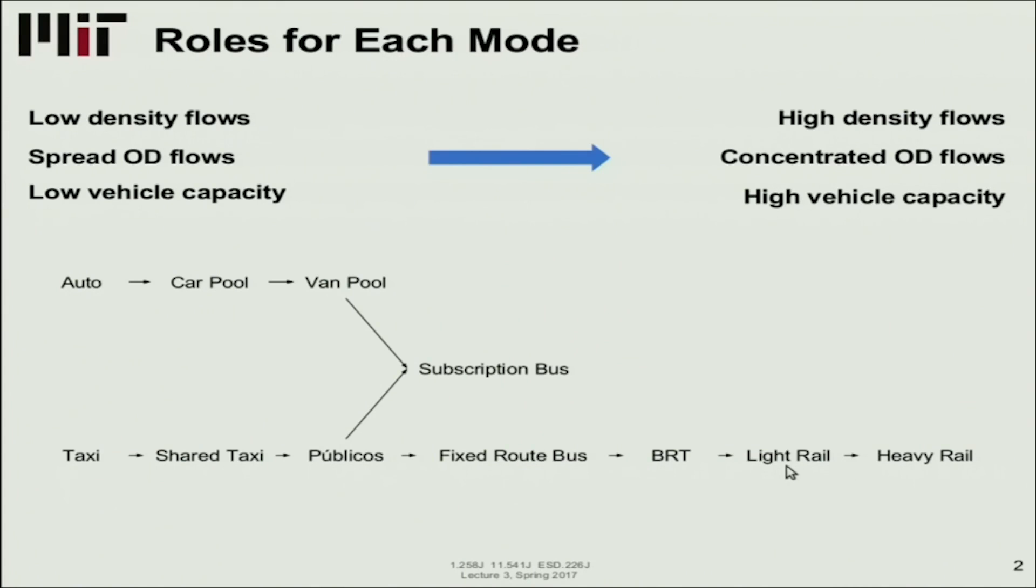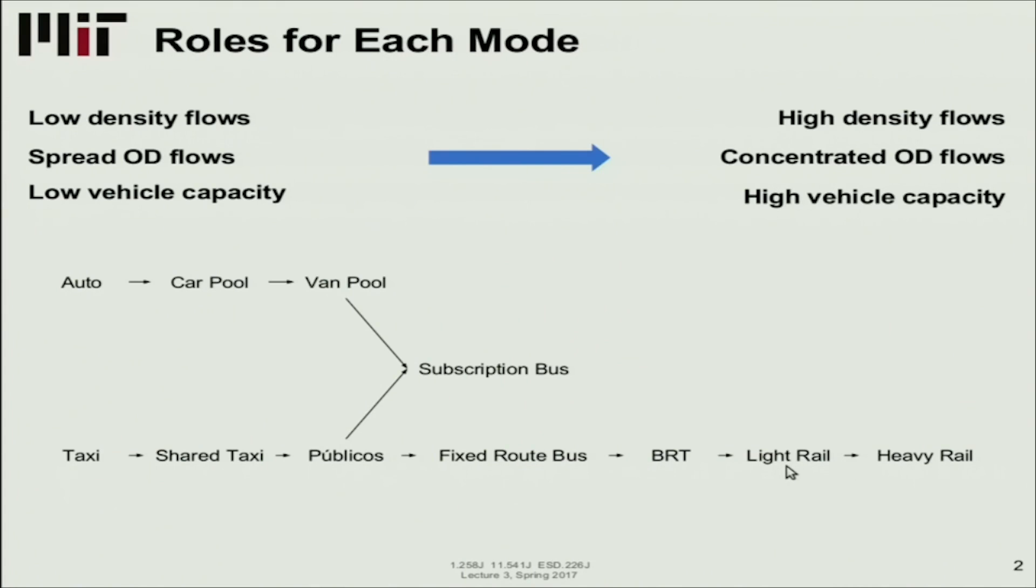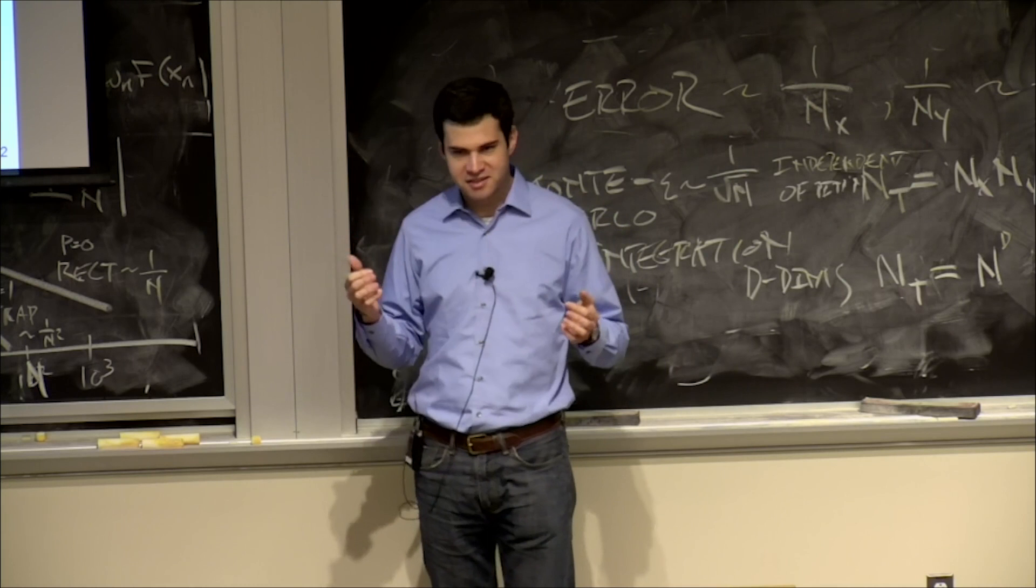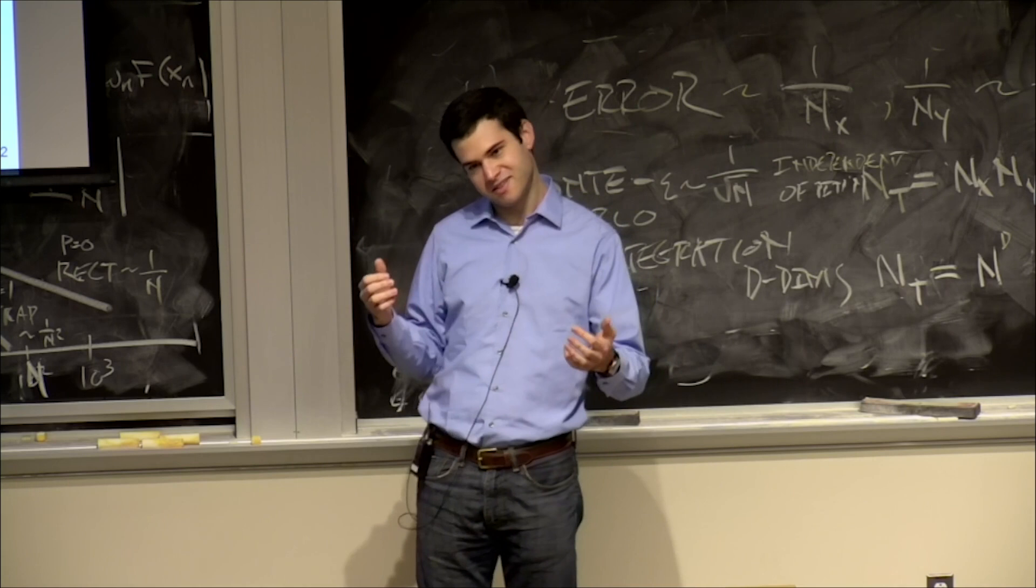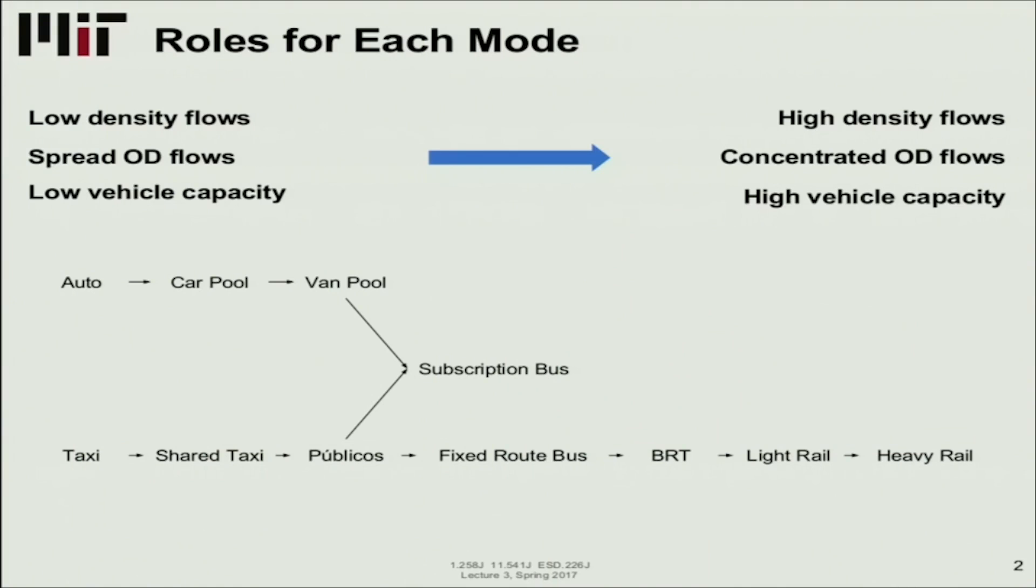Then we have fixed route bus, traditional bus service. BRT, which is bus rapid transit, where buses deliver transit that is generally delivered via rail services, light rail in particular. We'll look at examples later. Then light rail, like Boston's Green Line, and heavy rail, which is the traditional subway or metro system. In the middle, sometimes subscription bus. These are services often paid for by a company to get its employees to the site. It's not public, not everybody can use it, but it's not private because there's a third party providing the service.